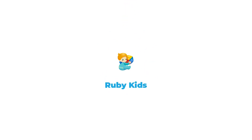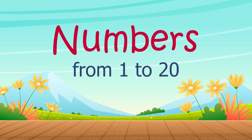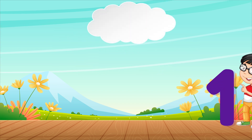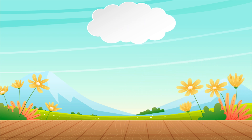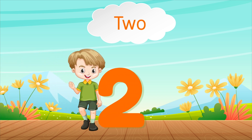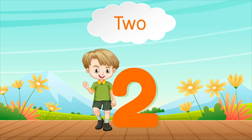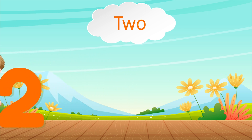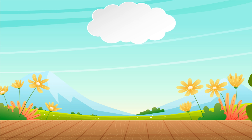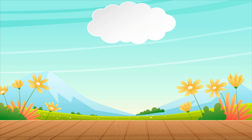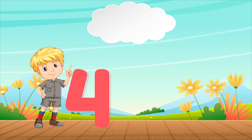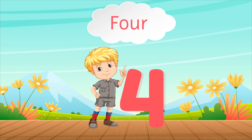Ruby Kids Numbers from 1 to 20. 1 - ONE. 2 - TWO. 3 - THREE. 4 - FOUR.